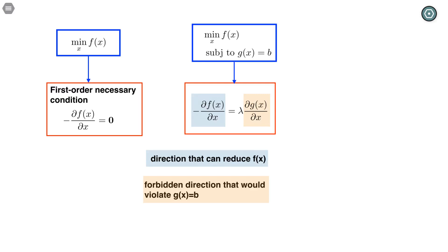Now suppose we're going to minimize f(x), but subject to some equality constraints. Instead of minimizing f(x) over all possible values of x, we only minimize f(x) when x is in what we call the feasible region. The feasible region is the set of x values that satisfy g(x) = b. If x is a solution, it must satisfy this equality. The left-hand side is a direction that can further reduce f, but it could be a forbidden direction, because the right-hand side — where lambda is any real number — is a direction that will also change the value of g, which is not allowed, as that would move us out of the feasible region.